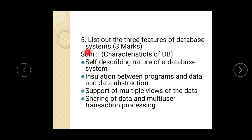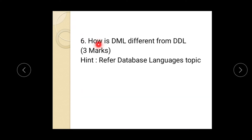Next question: list three features of a database system. We have already studied the characteristics of a database — self-describing nature, insulation between programs and data and data abstraction, support of multiple views, sharing of data, and multi-user transaction processing. Then: how does DML differ from DDL? DML is Database Manipulation Language and DDL is Data Definition Language. Please go through the database language topic. This is a remark question.